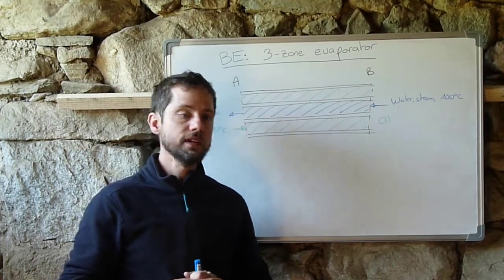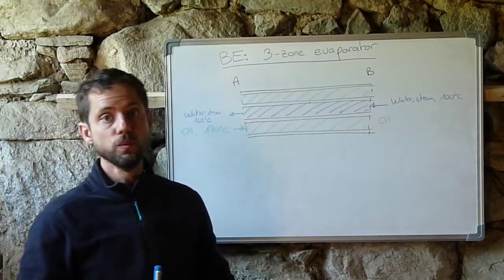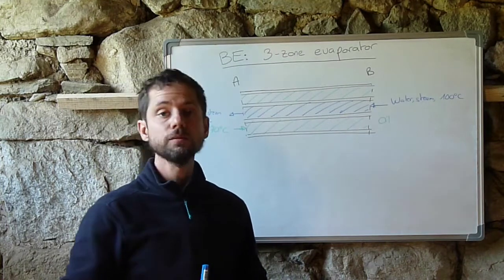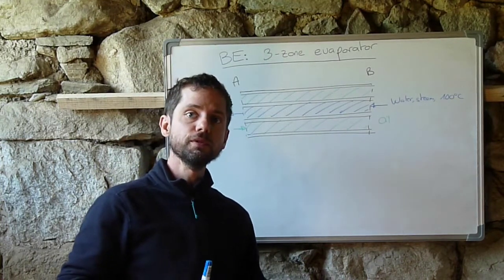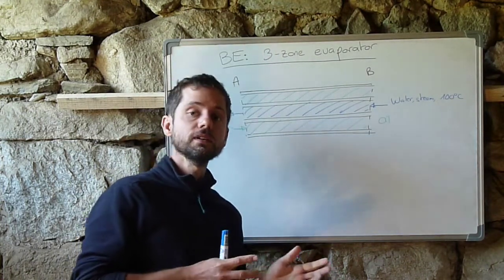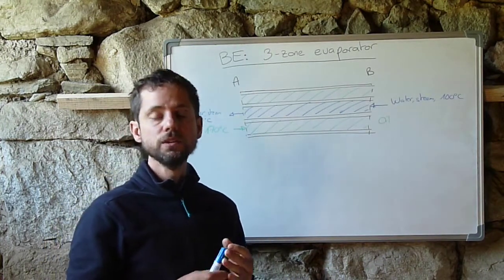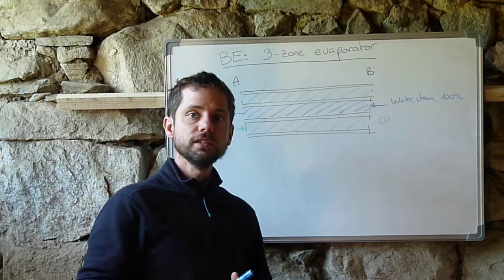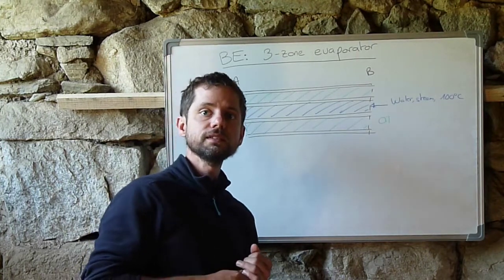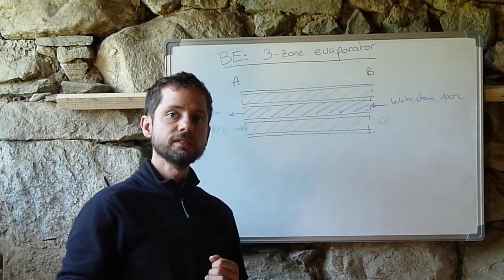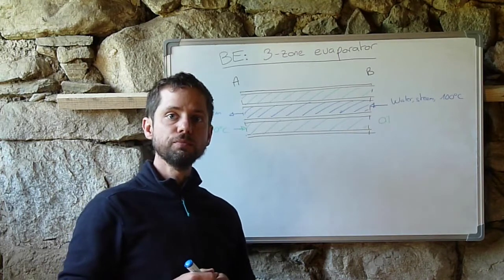For the second part of the exercise, we have seen that it's not possible to produce 2.5 grams per second of steam, so we have set a new value for the objective of 1.6 grams per second of steam to be produced.